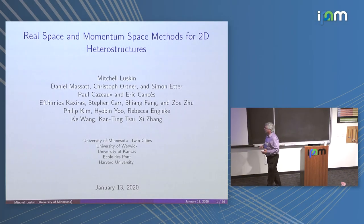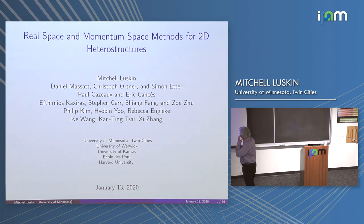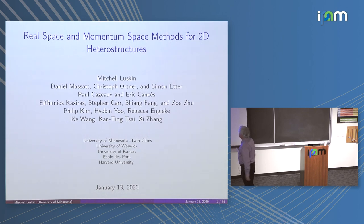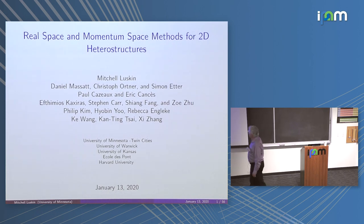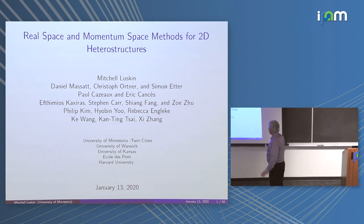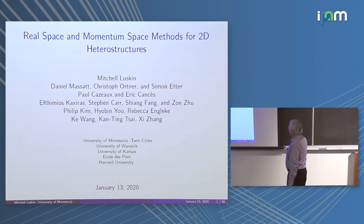I've been involved in this project on 2D heterostructures for six years. We had a MURI, and then we have some follow-up projects going on. Along the way, I've been lucky to collaborate with many people who've made many diverse contributions. I'm not going to specifically say who did what as we go along, because this lecture is somewhat unprepared. But many of the people who have been the main contributors are here in the audience.